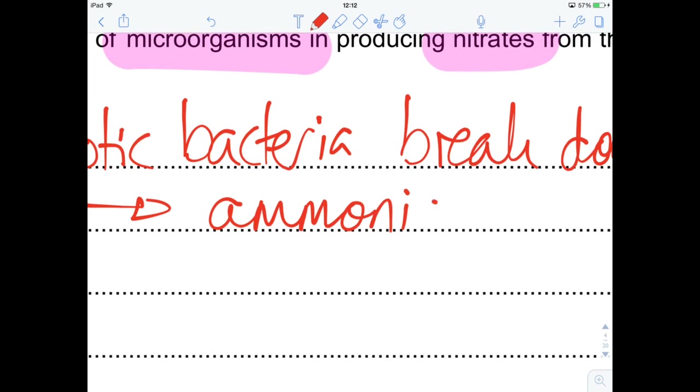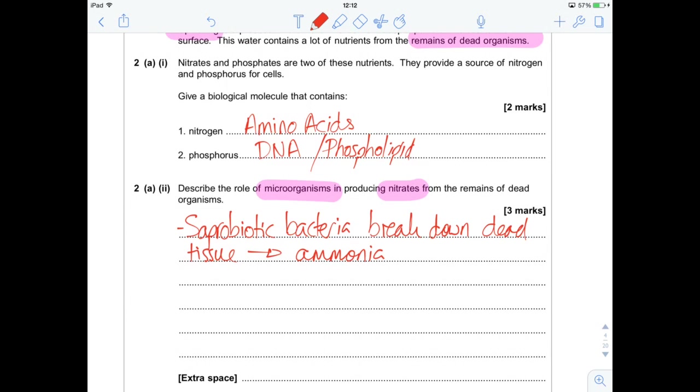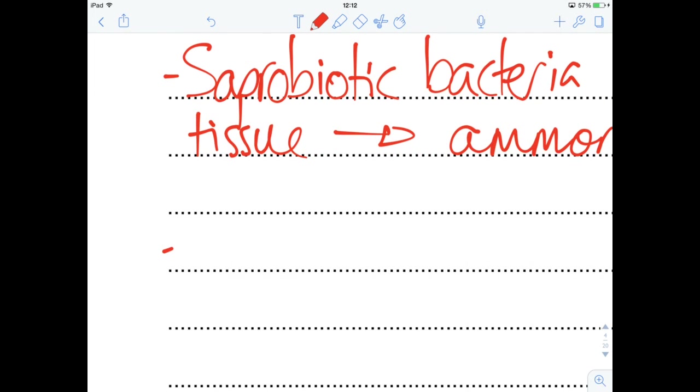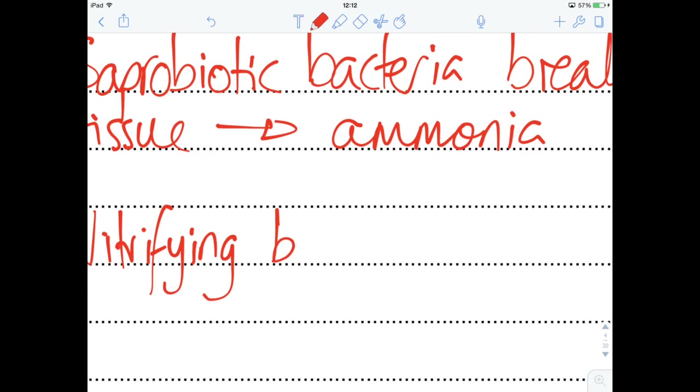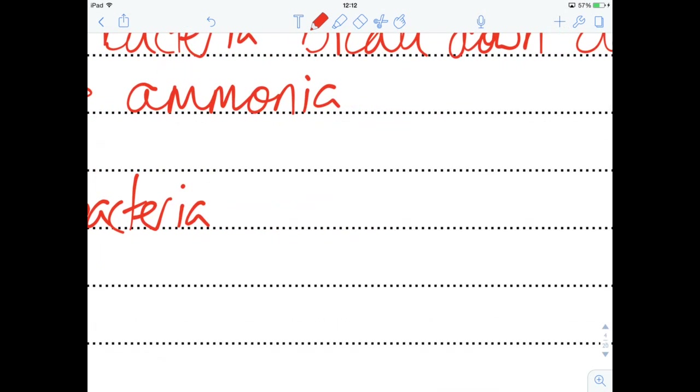And then your second mark, second bullet point, you can get two marks in. And you can say that nitrifying bacteria, that's one mark. So, nitrifying bacteria convert ammonia, and they convert it first to nitrites, sorry, first to nitrites,